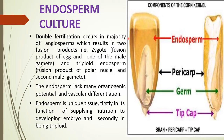In this picture you can see the endosperm in the case of a corn kernel. After double fertilization — which occurs in the majority of angiosperms — two fusion products result: the zygote, a fusion product of the egg and one male gamete, and the triploid endosperm, a fusion product of polar nuclei and a second male gamete. Endosperm lacks organogenic potential and vascular differentiation. It is a unique tissue in its function of supplying nutrition to the developing embryo, and in being triploid.